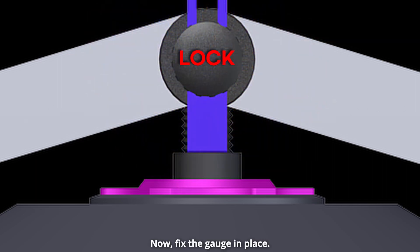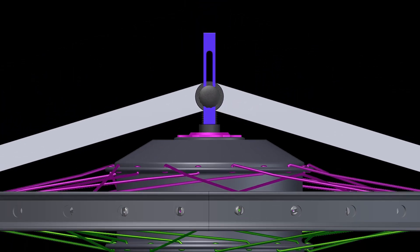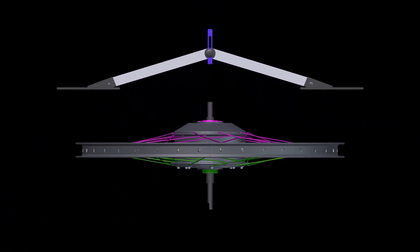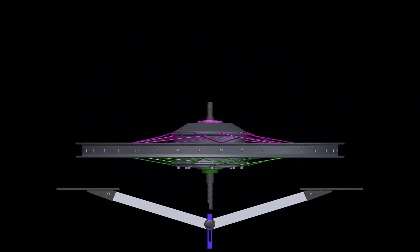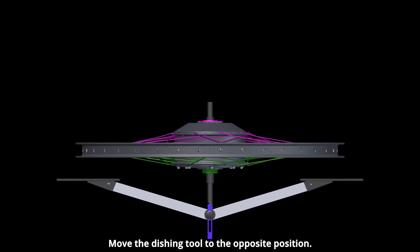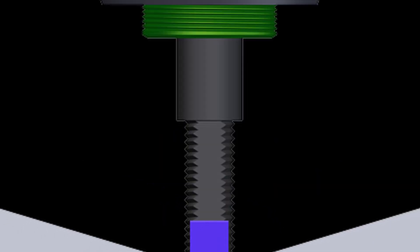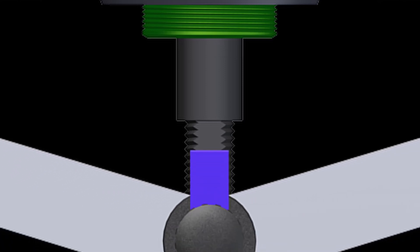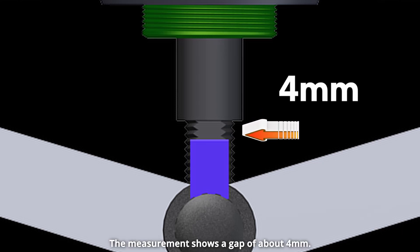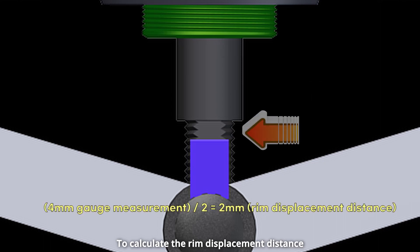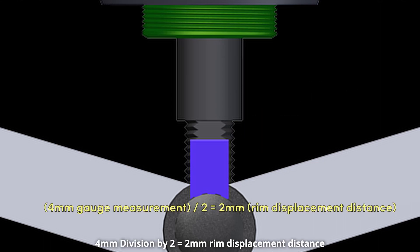Move the dishing tool to the opposite position. The measurement shows a gap of about 4mm. To calculate the rim displacement distance, 4mm divided by 2 equals 2mm rim displacement distance.